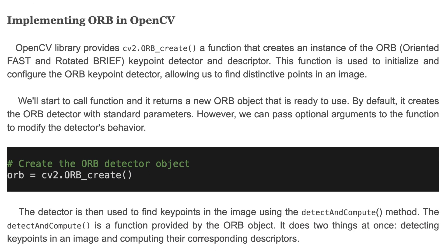The OpenCV library provides the ORB_create() function, which creates an instance of the ORB keypoint detector and descriptor. This function is used to initialize and configure the ORB keypoint detector, allowing us to find distinctive points in an image. When called, it returns a new ORB object ready to use. By default, it creates the ORB detector with standard parameters; however, we can pass optional arguments to the function to modify the detector's behavior.